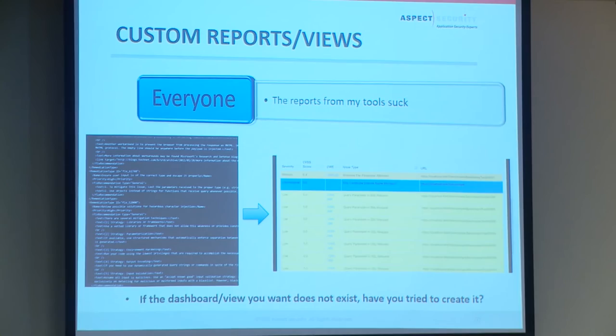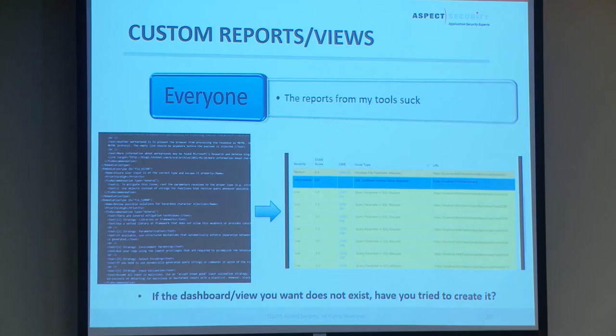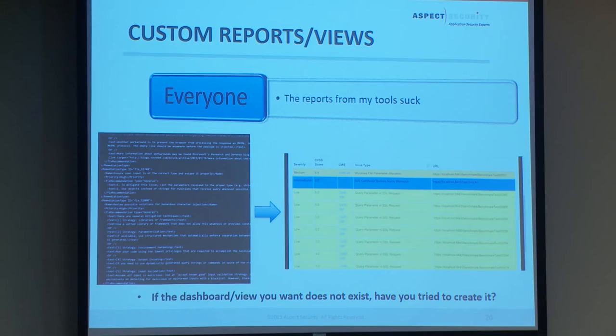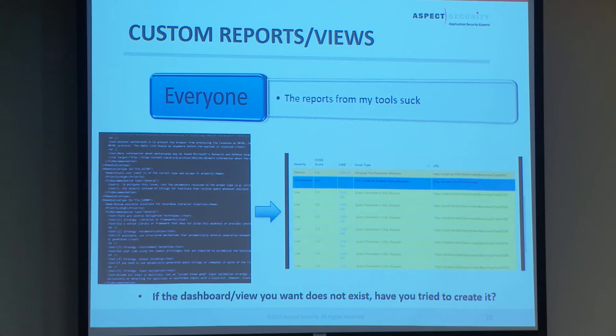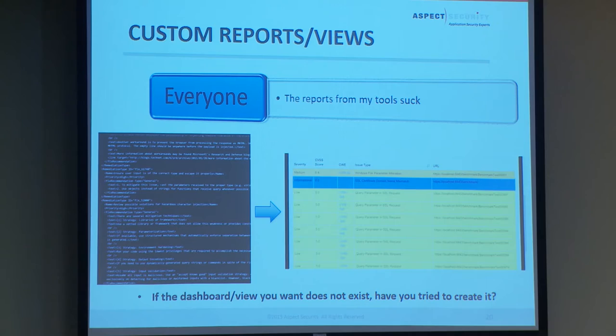Another issue: the reports from my tool aren't useful. If you're using a tool and want to view results in a way that meets your workflow, you can use XPath and XSLT. I took an AppScan Standard output file — their dynamic analysis tool — and used XSLT to create a custom HTML report. I'm going to show you what that looks like.